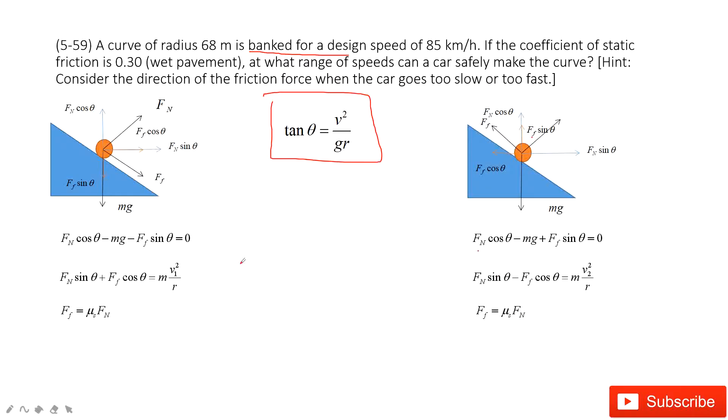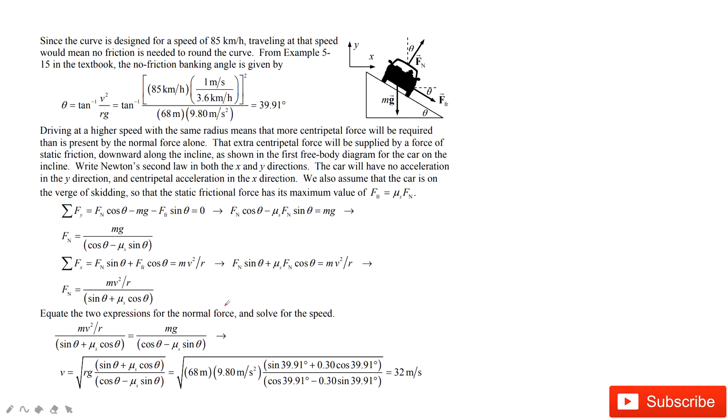The normal force is this one. And then when we solve these equations, we find the first situation, v1 is 32 m per second, v2 is 17 m per second. So this is the range for the velocity that can safely make this curve.